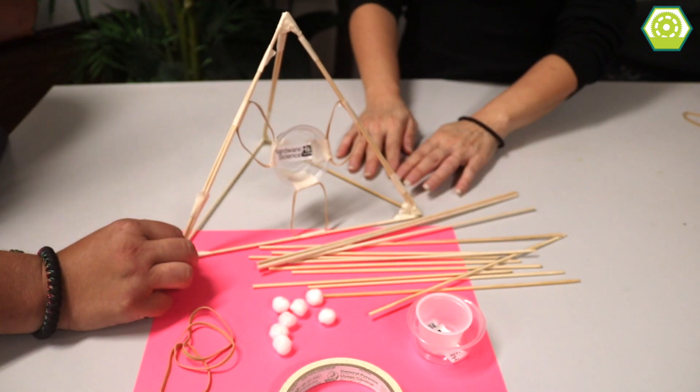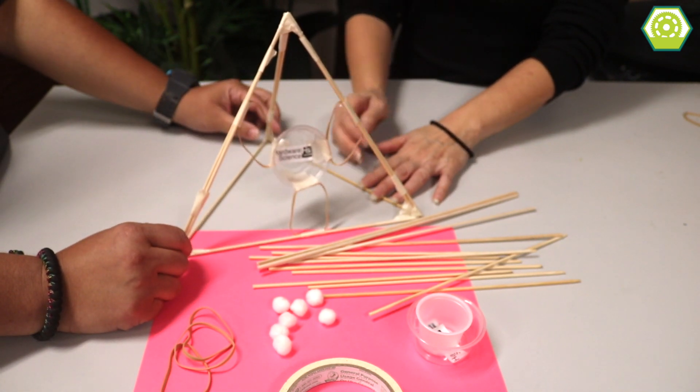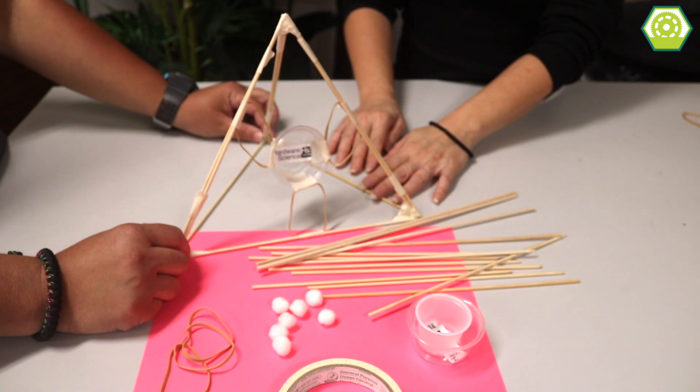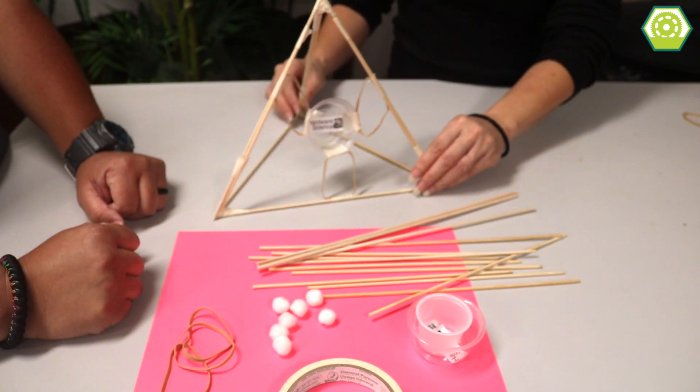What is this cool contraption? It's called a slingshot pyramid. Are we going to make another one? Yes, we are. Okay, so let's move this on the side so we have some room.